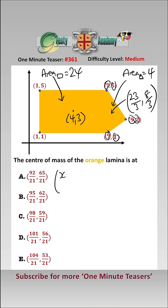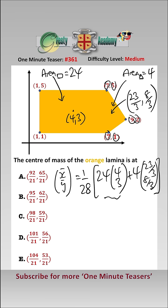Now, we can use vectors here. So, x-bar, y-bar, which is the centre of mass of the lamina, is equal to 1 over the total area, that's 1 over 28, times 24, 4, 3, which is the rectangle contribution. Add 4, 23 over 3, 8 over 3, which is the triangle's contribution.